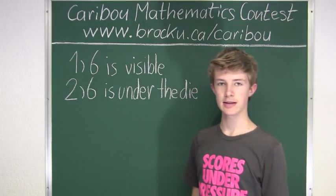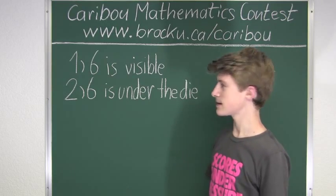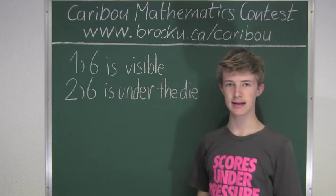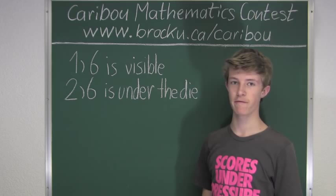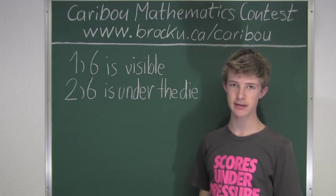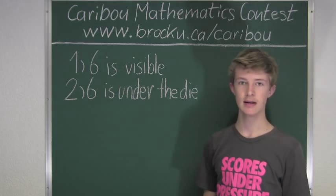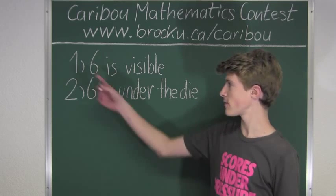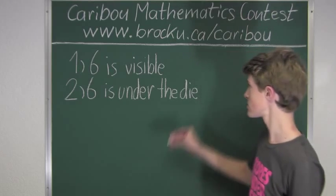So, let's investigate the first case: 6 is visible. If we know that 6 is one of the numbers that is visible, then we know that the product of the visible numbers must be divisible by 6, because 6 is one of those factors. So, for case 1, the product must always be divisible by 6.